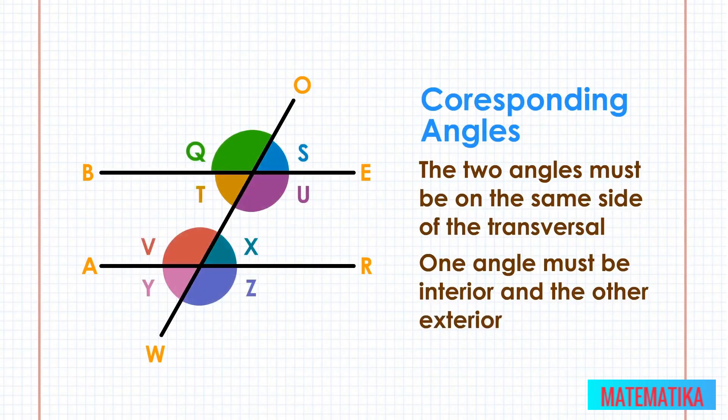Notice that angle Q is congruent to angle V. Angle Q is an exterior angle on the left side of transversal OW, and angle V is an interior angle on the same side of the transversal line.